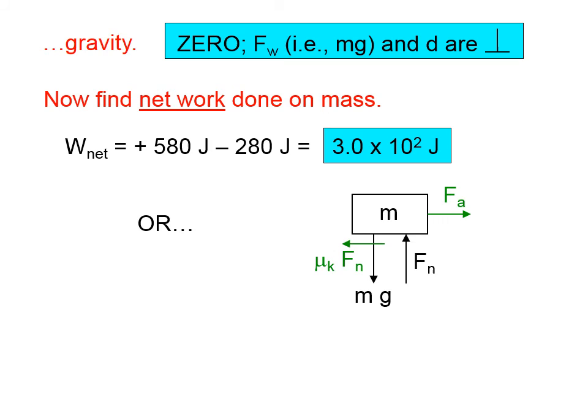Now the other way you could find the net work is this equation in the lower left. The net work is equal to the net force multiplied by the distance. Well, what's the net force? We talked earlier that the weight, mg, and the normal force were numerically equal to each other and opposite in direction. Therefore, they cancel.